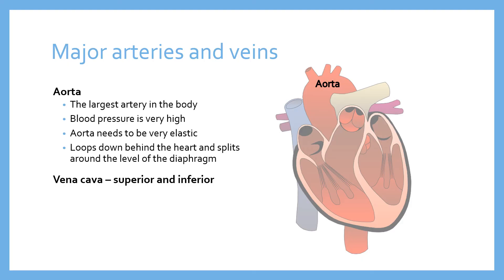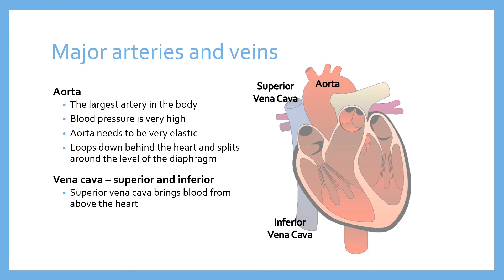The vena cava is the blue-colored vessel on the right side of the heart as we look at it. It's one vessel but we refer to its two parts: the superior vena cava at the top, and the inferior vena cava below. Both join together just as they return blood into the right atrium. The superior vena cava brings blood from above the heart, and the inferior vena cava brings blood from below the heart.